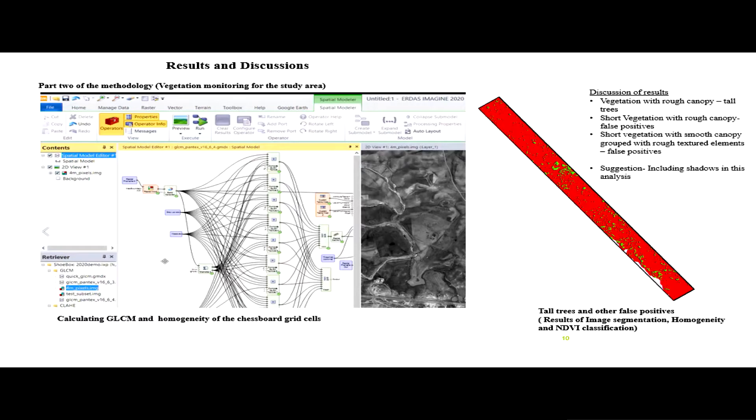This is under the spatial modeler of ERDAS Imagine. That is the model of the homogeneity matrices. This is the result of running that model. You can see the green ones are now vegetation. If you compare with the past one, the green ones are really reduced. The green ones consist of tall trees and other false positives.